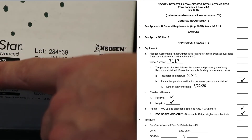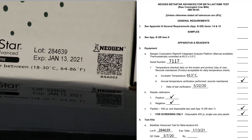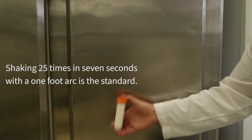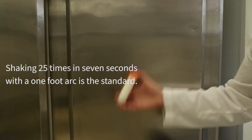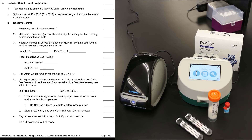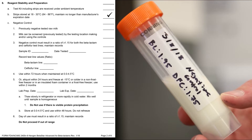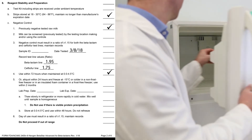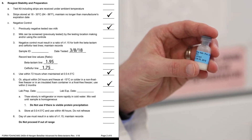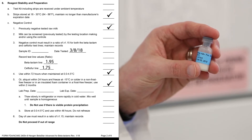Section 4 specifies the test kits, noting lot number, expiry date, QC date, and person responsible. Section 5 refers to both milk sample and positive-negative control mixing. Section 6 refers to reagent stability and preparation. Betastar Advanced tests are the only tests within the NCIMS Appendix N program that can be stored at room temperature. Daily performance checks require previously tested raw milk as a negative control. The negative control must be properly labeled with the numerical ratio and date tested, and must be used within 72 hours, or frozen controls can be prepared and used instead. Once frozen controls are thawed, they must be used within 48 hours.